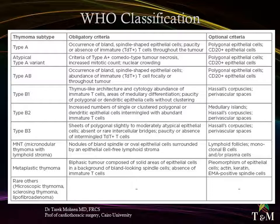Type B1 — thymus-like architecture and cytology, abundance of immature T-cells, areas of medullary differentiation; optional: sparse polygonal or dendritic epithelial cells without clustering, Hassall's corpuscles, perivascular spaces. Type B2 — increased numbers of single or clustered polygonal or dendritic epithelial cells intermingled with abundant immature T-cells; optional: medullary islands, Hassall's corpuscles, perivascular spaces. Type B3 — sheets of polygonal, slightly to moderately atypical epithelial cells, absent or rare intercellular bridges, paucity or absence of intermingled TdT+ T-cells; optional: Hassall's corpuscles, perivascular spaces.